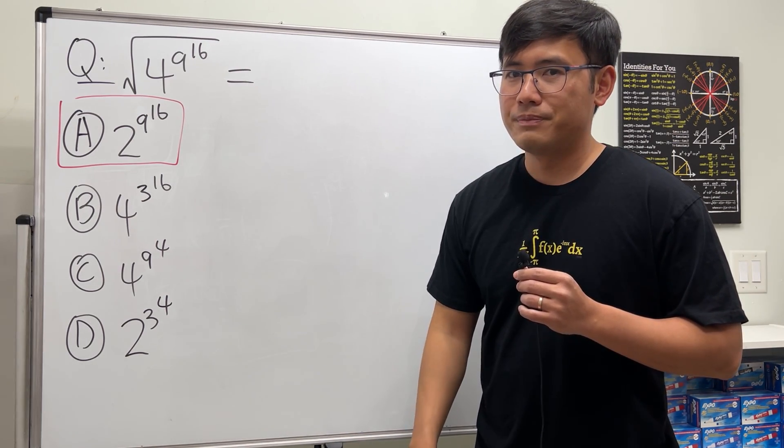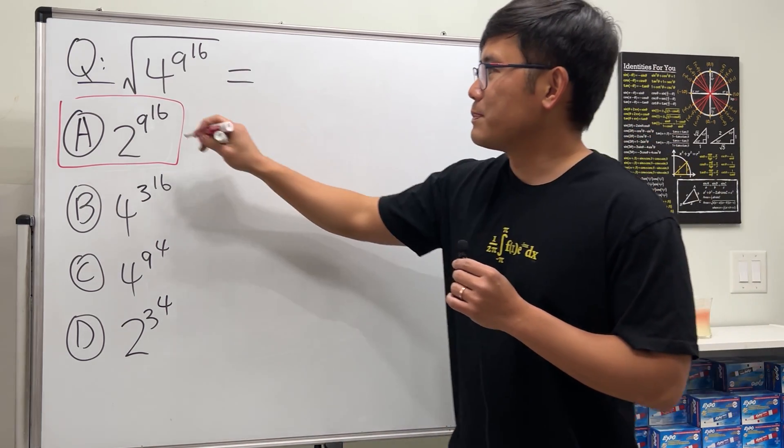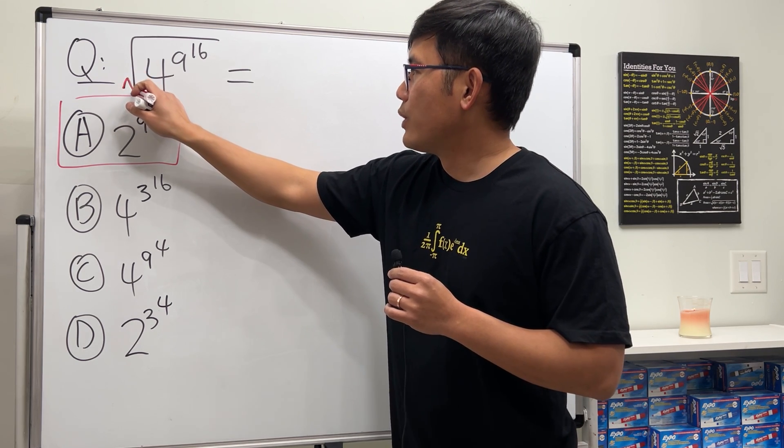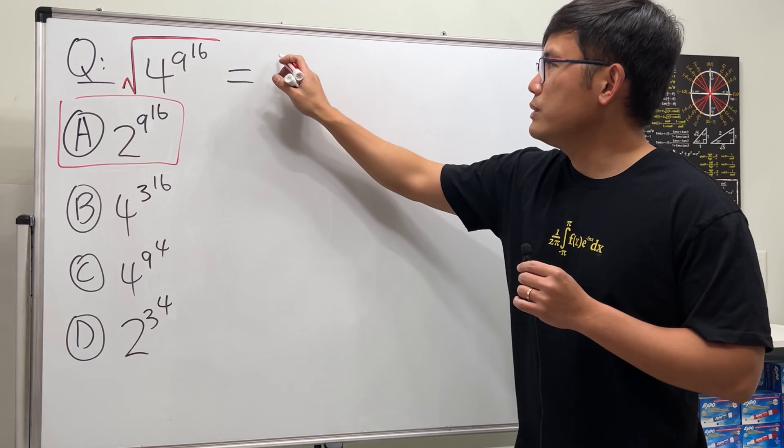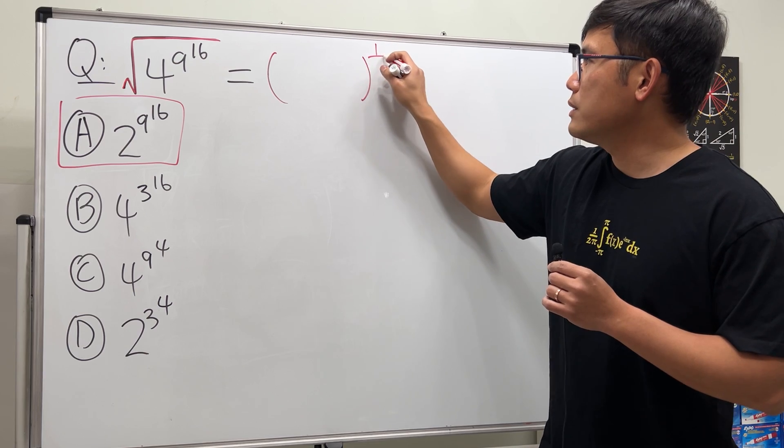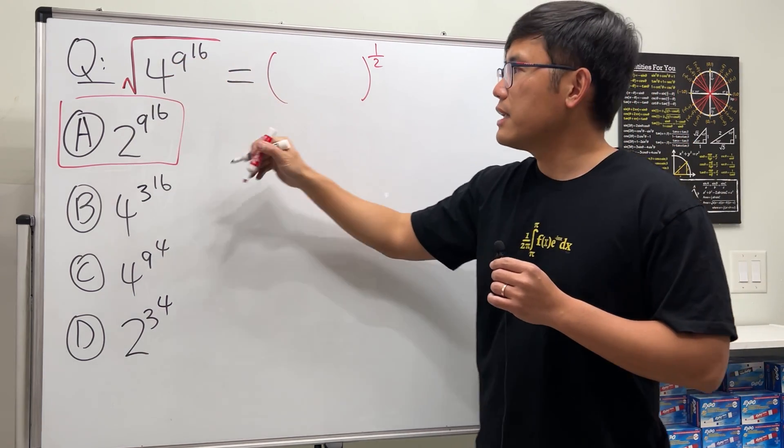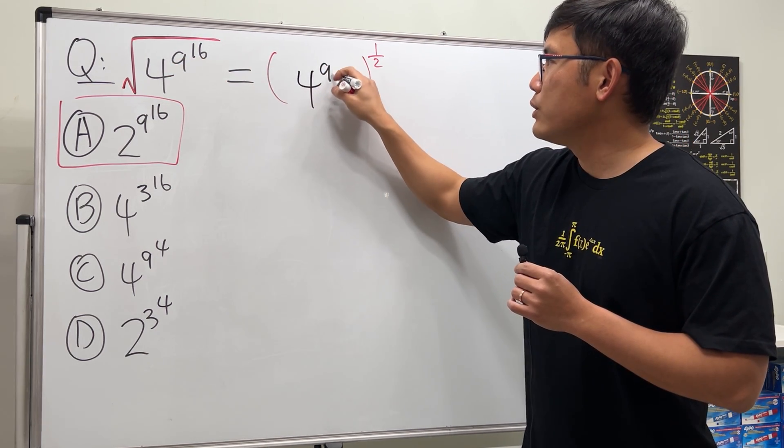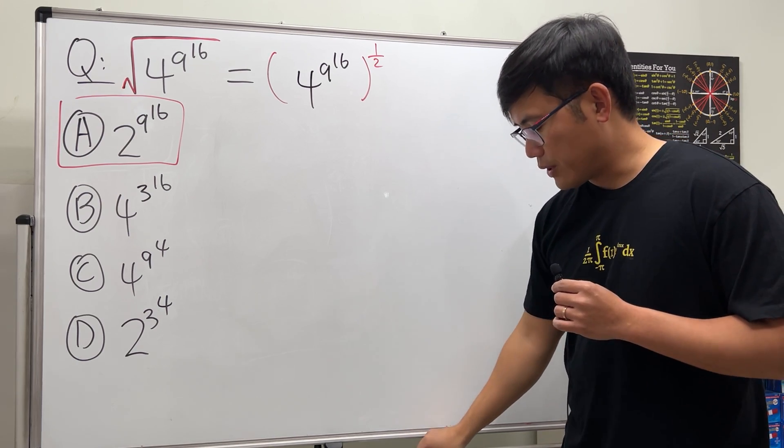So let me explain that. Right here, we have that square root. This square root is the same as the one-half power. So let me write that down. And then inside here we have 4 to the 9 to the 16th power. And here's a little note for you guys.